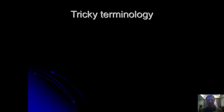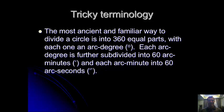There's some tricky terminology here. The most ancient familiar way to divide a circle is 360 equal parts. Each one of these is known as an arc degree. Each arc degree is further subdivided into 60 arc minutes, and further into 60 arc seconds.